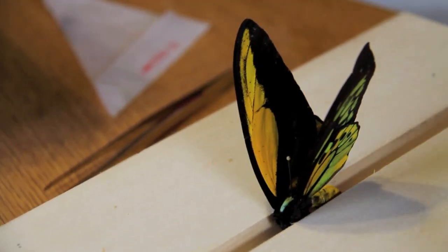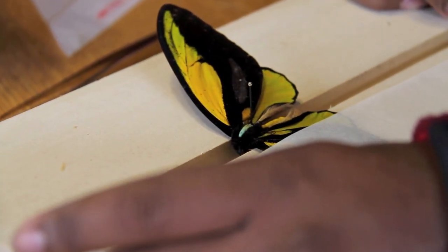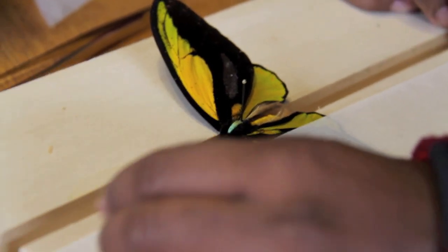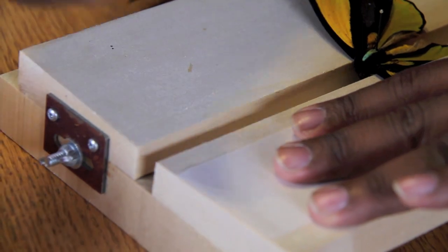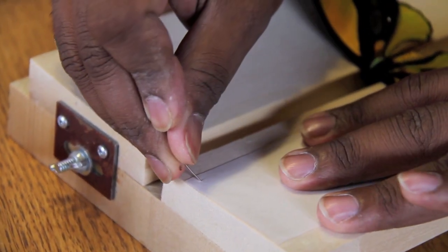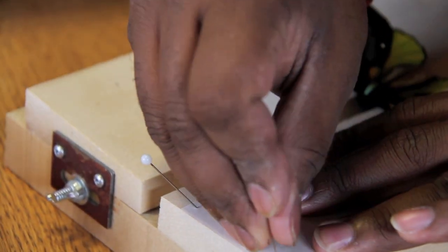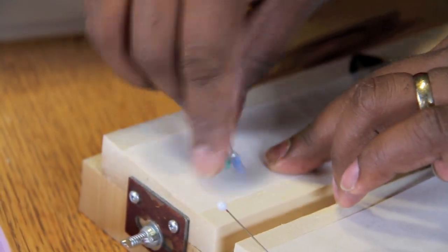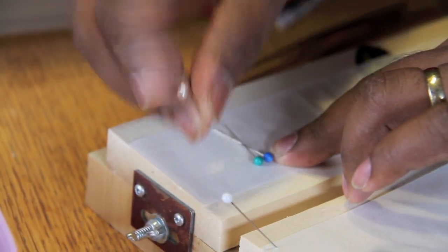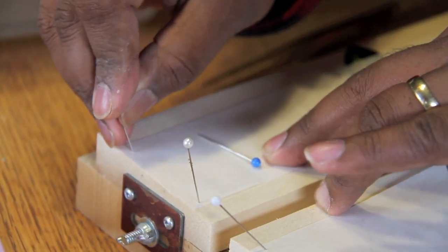Next I'm going to be taking two pieces of tracing paper. Some people like to use wax paper. I don't recommend it because wax paper can pick up scales and remove the coloring from the wings if we are not careful. So, I'm just going to secure the two pieces of tracing paper from the top. This will give me the necessary base to be able to start the process of spreading the specimen.